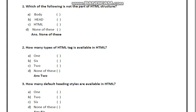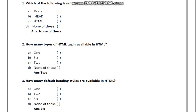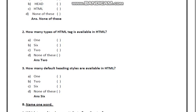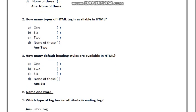The answer is 2 — there are 2 types of HTML tags. How many default heading styles are available in HTML? The answer is 6 tags are available, from h1 to h6.